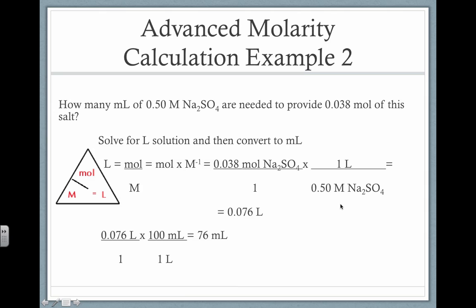This should be mol, not capital M. So, the mols cancel out, leaving you with 0.076 liters. But we want milliliters. And remember, I messed this up too. There should be 1,000 milliliters in a liter, not 100. And this should be mol. So, now, hopefully that looks a lot better to you. And I apologize for all the typos.